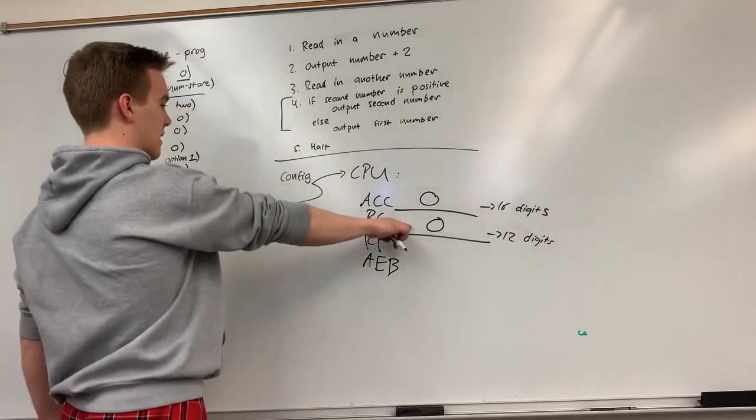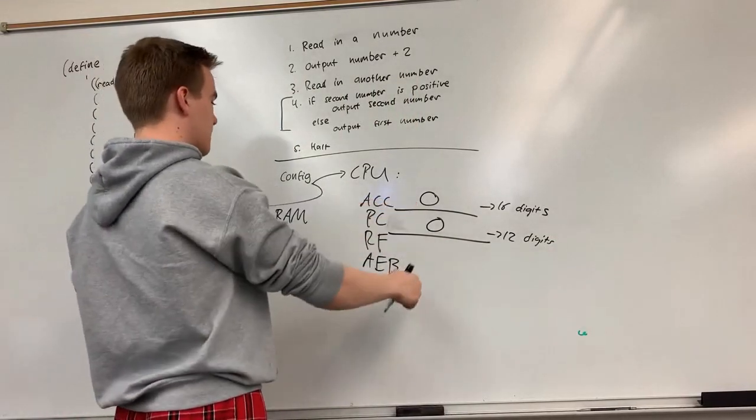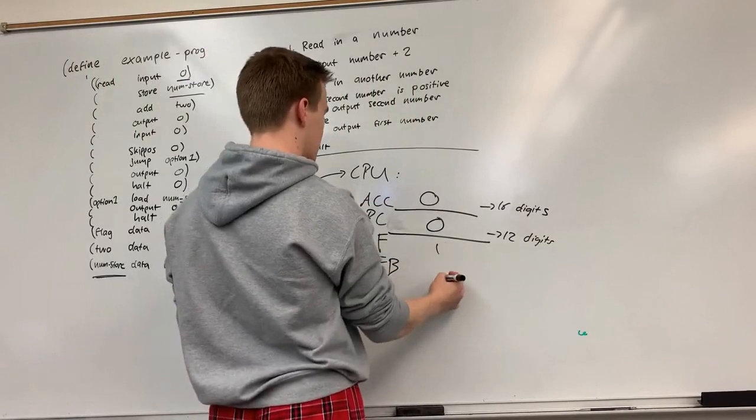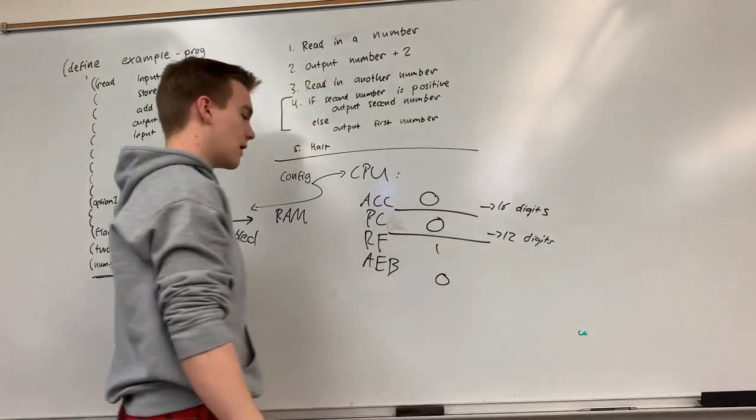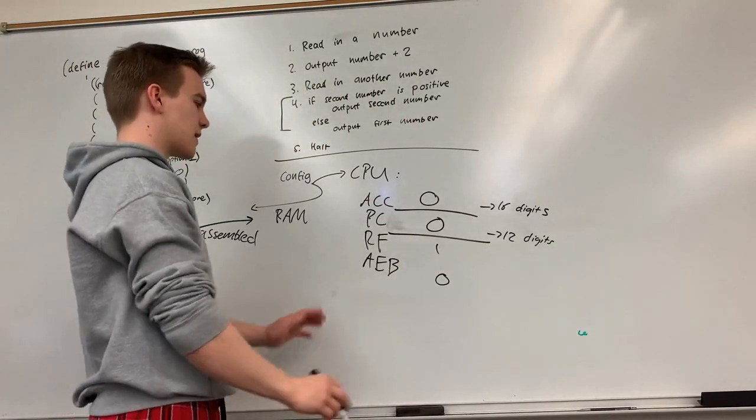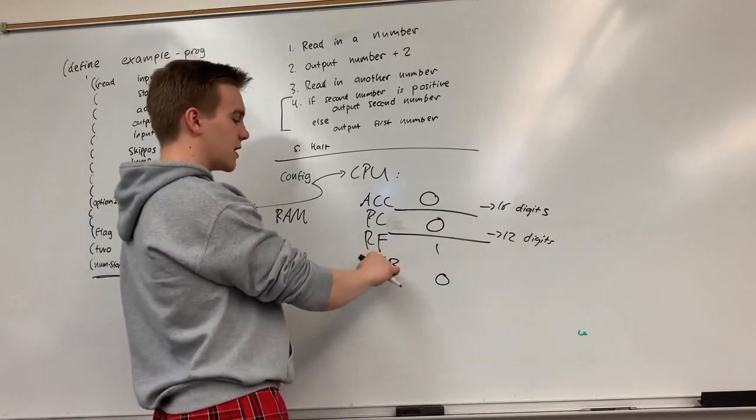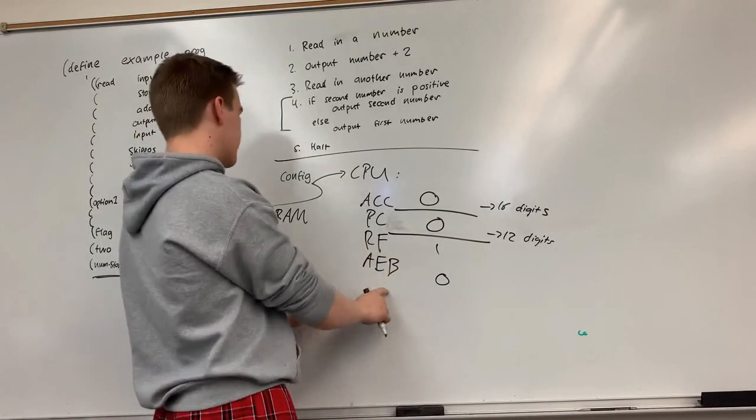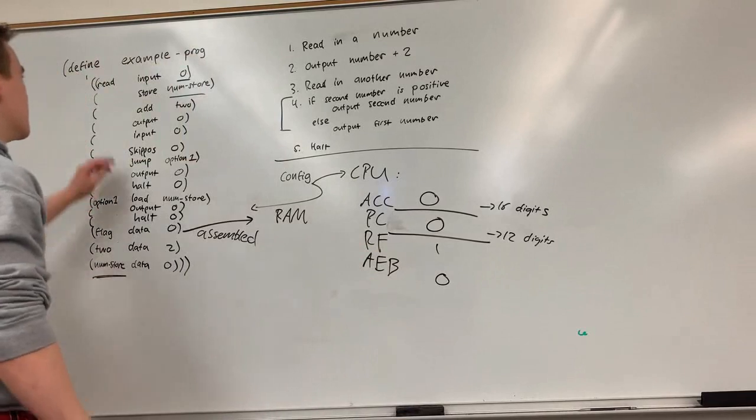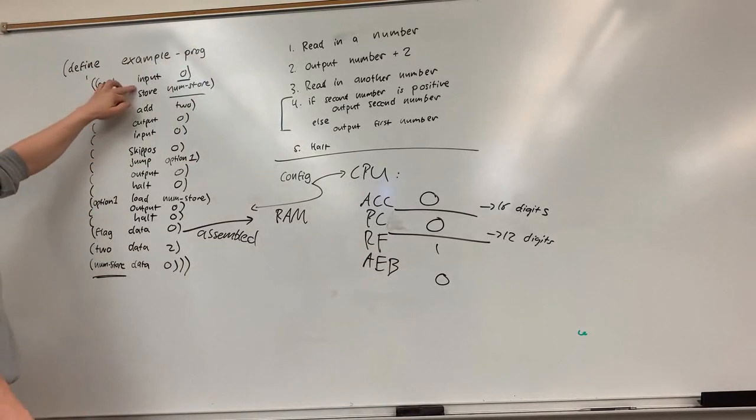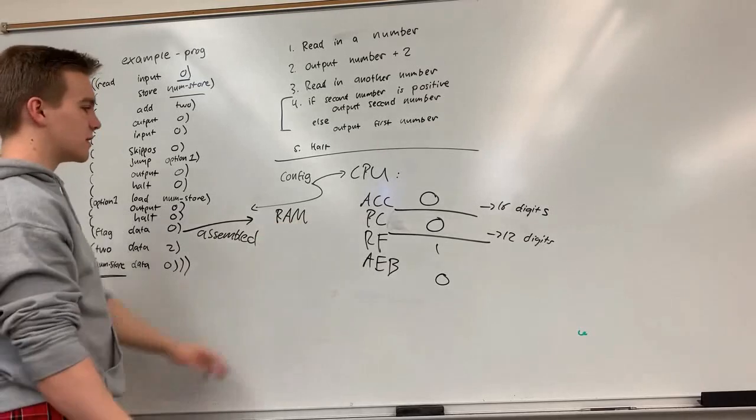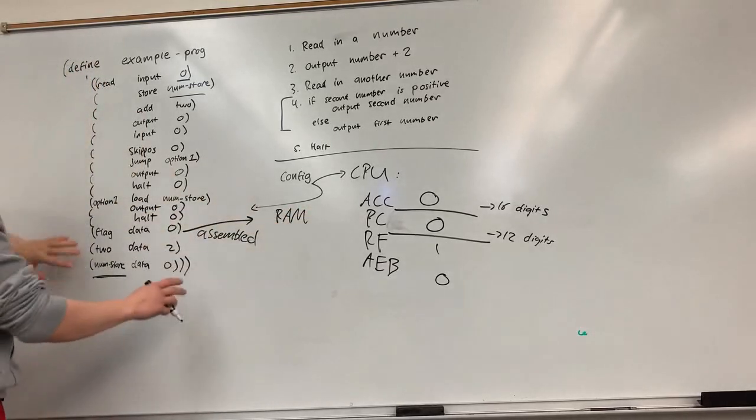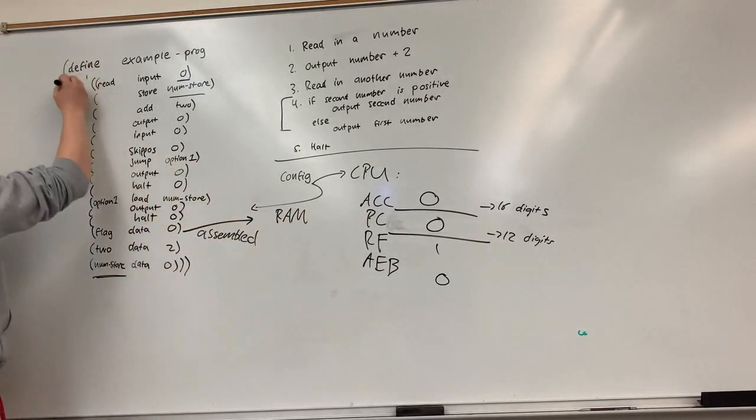So when I start my program counter zero, my accumulator zero, I think the run flag is probably one, AEB is zero, but ignore those right now. This is to check if you're done and this is to check if you have some math problems, but we don't right now. So I start by reading input from the user because maybe something good to do here would be to understand that when we assemble we number each of these.